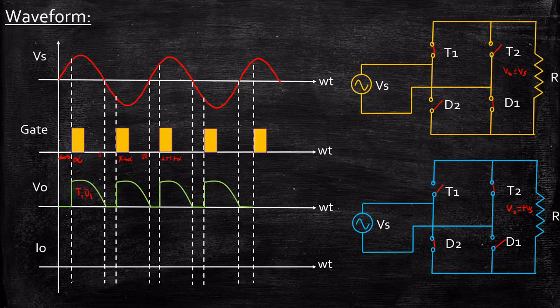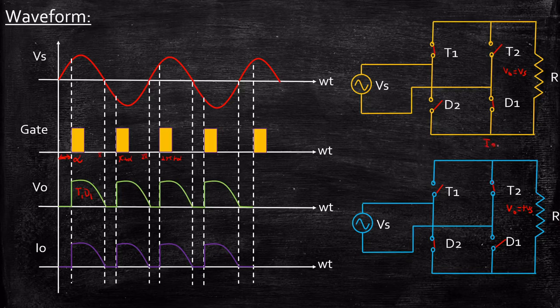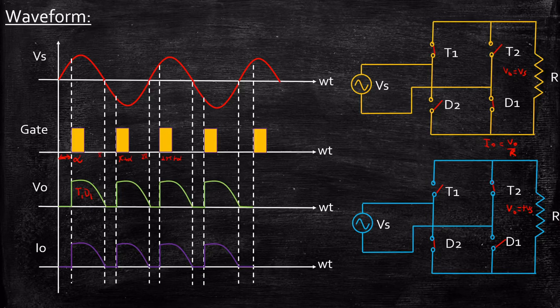The current waveform will exactly follow the output voltage waveform. If R equals 1, then Vout equals Iout. But if R has some value, Iout equals Vout divided by R, so the magnitude of the signal changes, but it exactly follows the shape of the output voltage. The amplitude of Iout changes with respect to Vout depending on the value of R. This is the waveform for a single-phase semi-converter with R load.